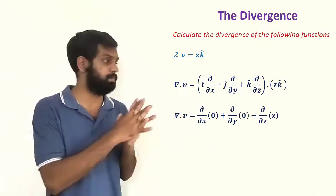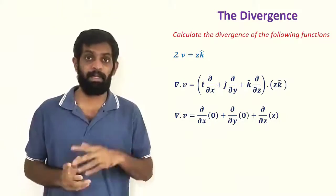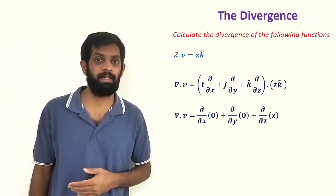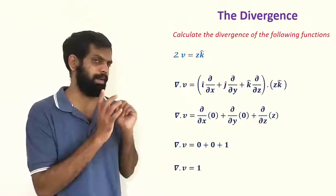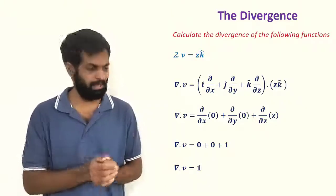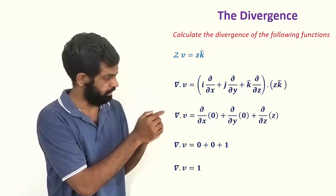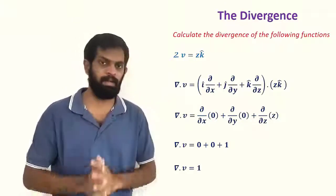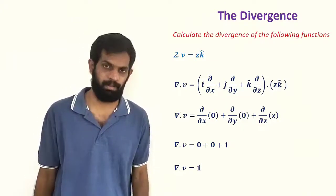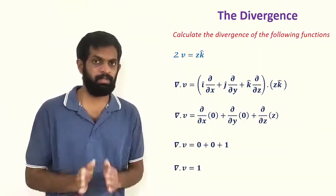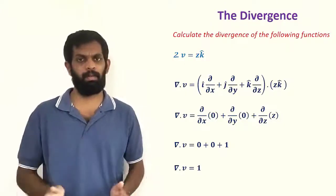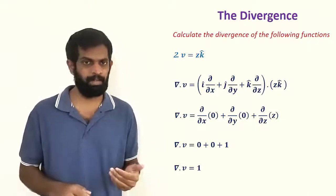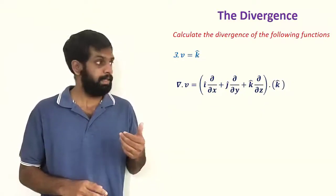We get ∂/∂z of z equals 1. So zero plus zero plus one — del dot V equals 1. Clear. So the second problem gives del dot V equal to 1.